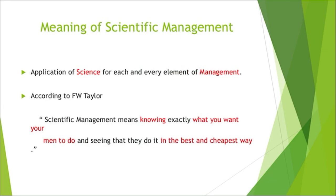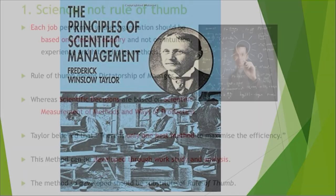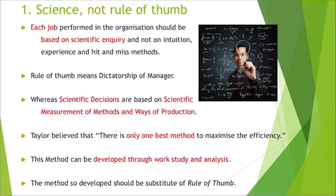Now let's look at the meaning of Scientific Management. According to F.W. Taylor, it means knowing exactly what you want your men to do. Now we'll proceed to the Principles of Scientific Management. There are four principles given by F.W. Taylor. The first one is Science, Not the Rule of Thumb.